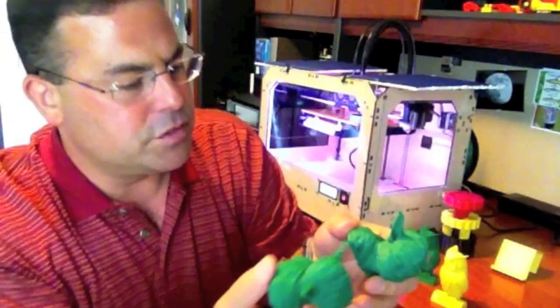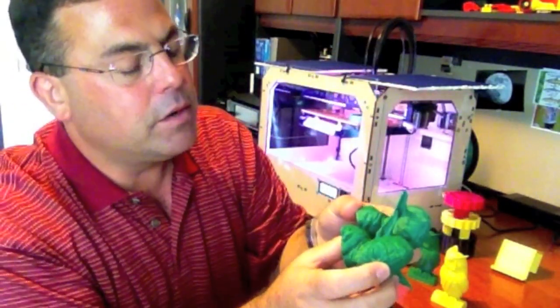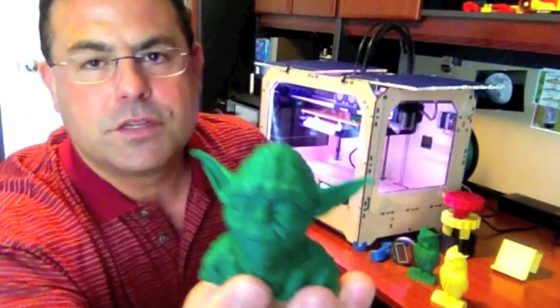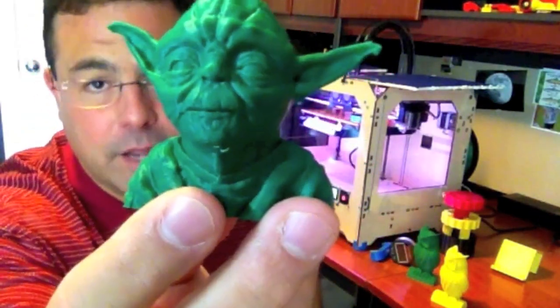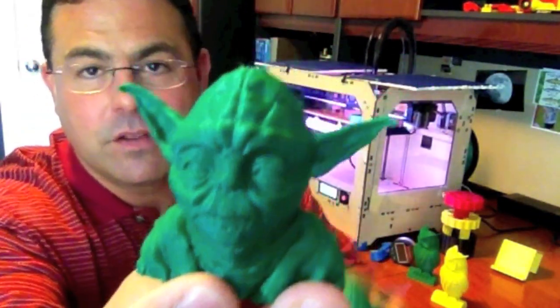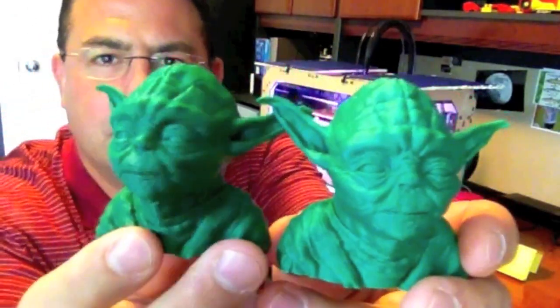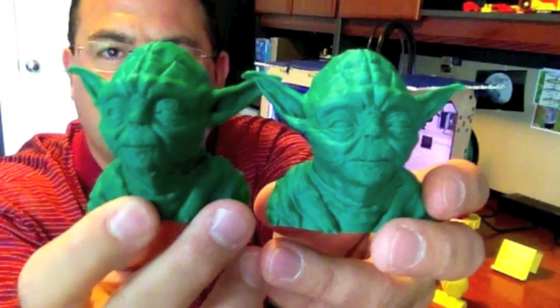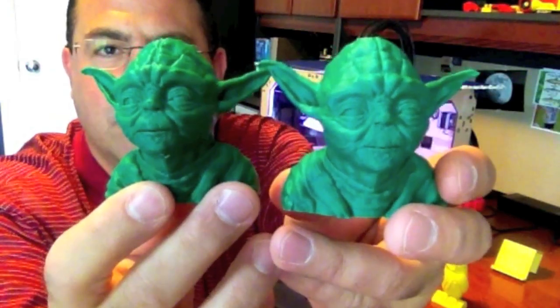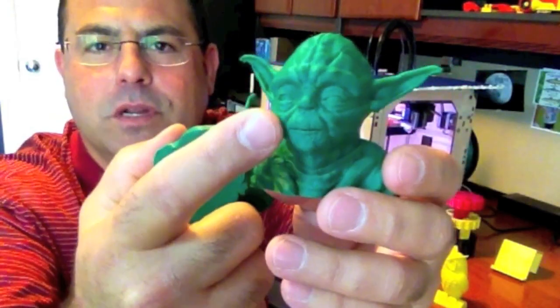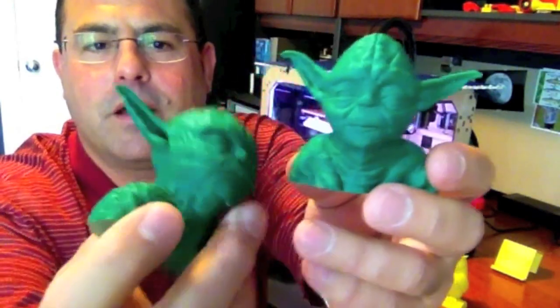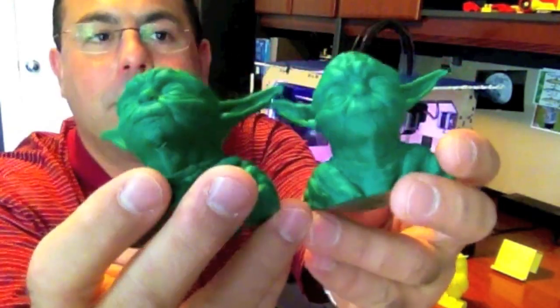One is .2 millimeter layer height, and one is .1. This is the .2, it came out really nice. And then this is the .1, it came out even nicer. There's more detail. I'll take some stills and you'll be able to see it, but the details, especially around the eyes and the mouth on the .1 really came out nice.